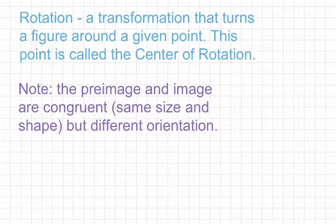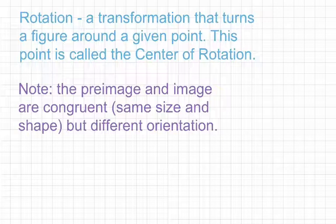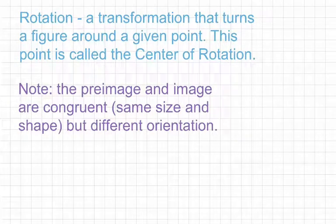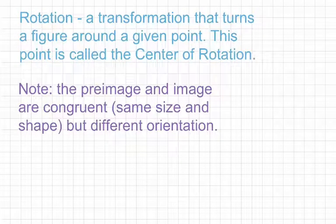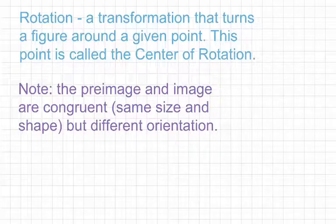The definition for rotation is a transformation that turns a figure around a given point. This point that the figure is turned around is called the center of rotation. One thing I want you guys to note is that the pre-image and the image are congruent, meaning that they're the same size and shape, but the orientation is going to be different.